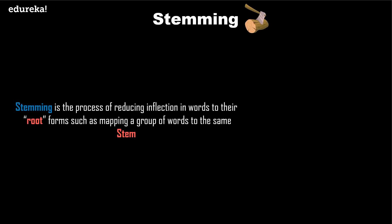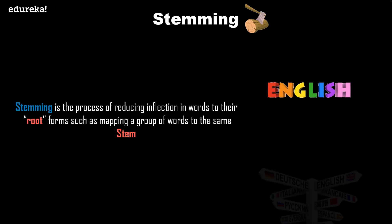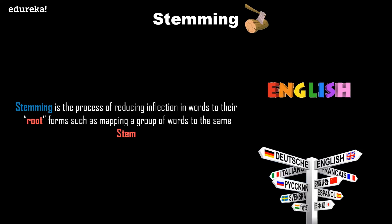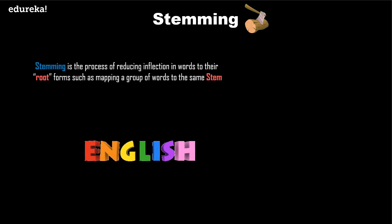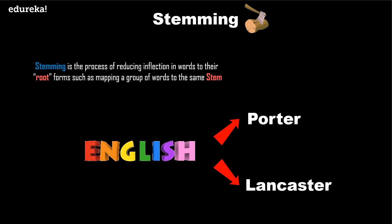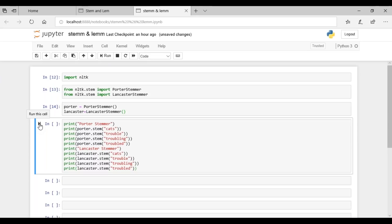Stemming is the process of reducing inflection in words to their root forms, such as mapping a group of words to the same stem, even if the stem itself is not a valid word in the language. There are English and non-English stemmers available in the NLTK package. For English, you can choose between Porter stemmer and Lancaster stemmer, Porter stemmer being the oldest, originally developed in 1979. Lancaster stemmer was developed in 1990 and uses a more aggressive approach. Let's try out the Porter stemmer.